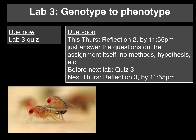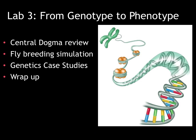Hi everyone, welcome to week three of the evolution and biology of sex. This week's topic will be genetics, essentially looking at the transition from genotype to phenotype — our encoded DNA profile to the expressed traits. In this video I'll be going over a review of the central dogma of biology, and in lab you'll go over a fly breeding simulation and participate in some genetics case studies.